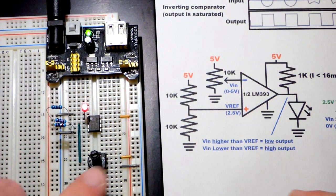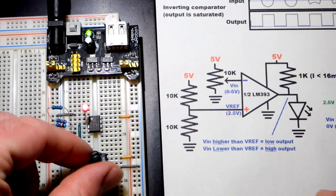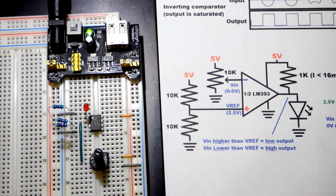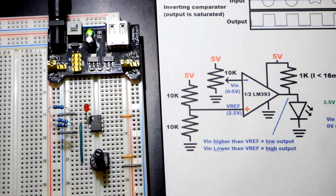We turn the power supply on. You can see the trim pot is down towards the negative rail and the LED is on. When I turn it towards the positive rail, now the LED is off.